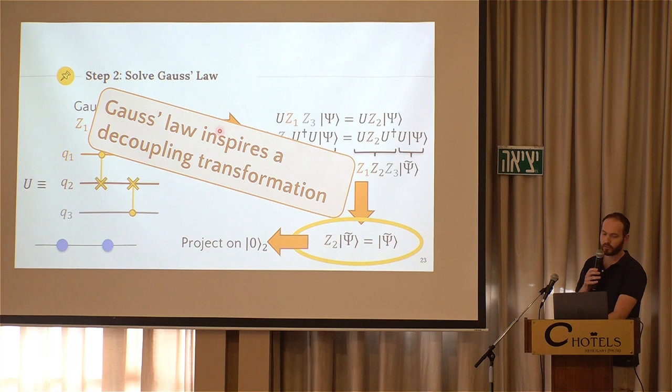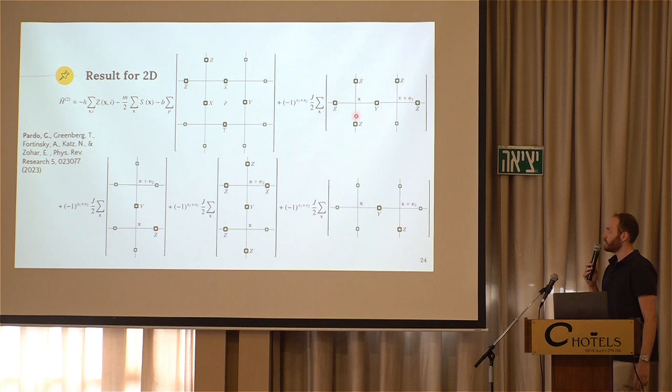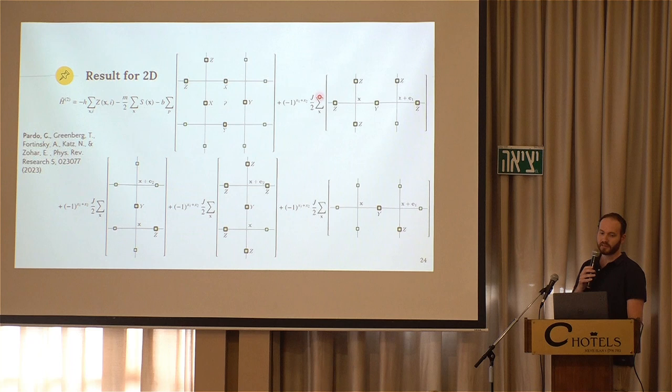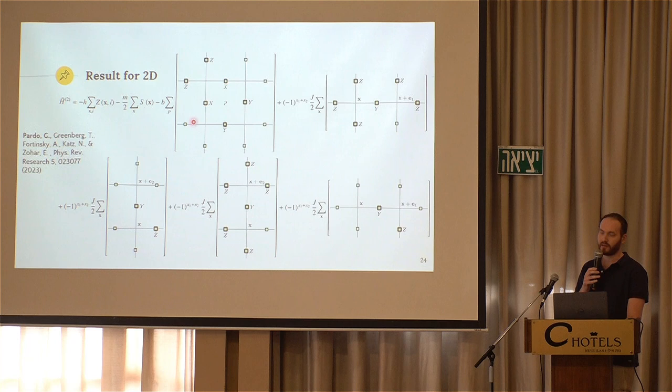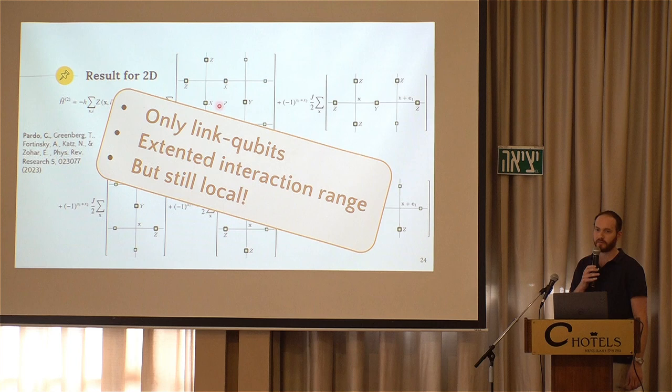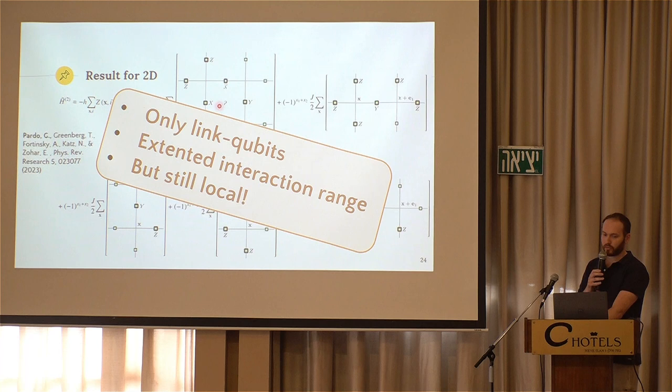So we do this thing for the Z2 lattice gauge theory, we do the calculation. This is the Hamiltonian that you get. It's kind of a monster Hamiltonian in two dimensions. For example, here you have six-body interactions instead of four-body interactions in the plaquette term. Here you have also six instead of three. But the main result is that you only have the links here. There are nothing on the sides. In the original model we have fermions on the sides, which is difficult. Here we only have qubits on the links, which is easier. And the price is the extended interaction range, but the main point is that it is still local.